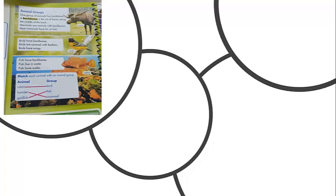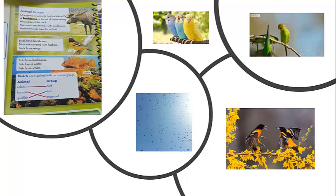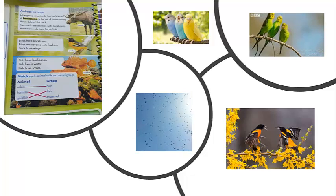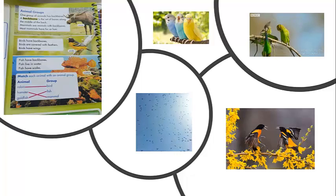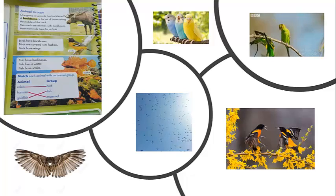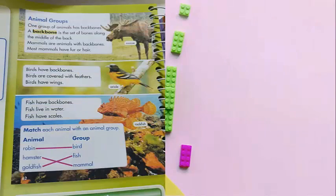Let's read the next line: birds have backbones. We know that birds have feathers and they fly in the air — birds also have backbones. Birds are covered with feathers; feathers are the things on birds which help them fly. Birds also have wings — if they don't have wings they won't be able to fly up high in the air.